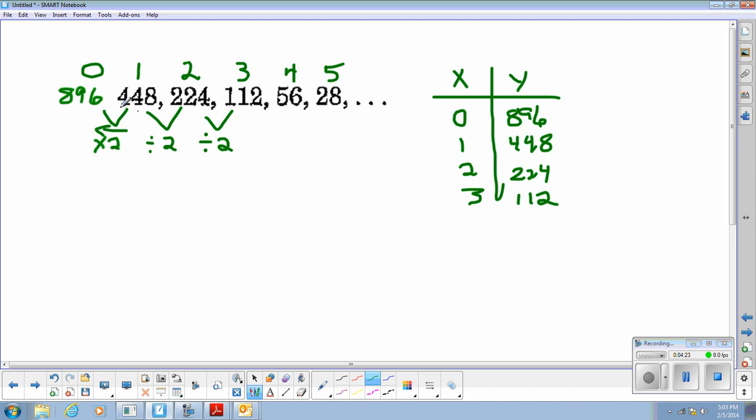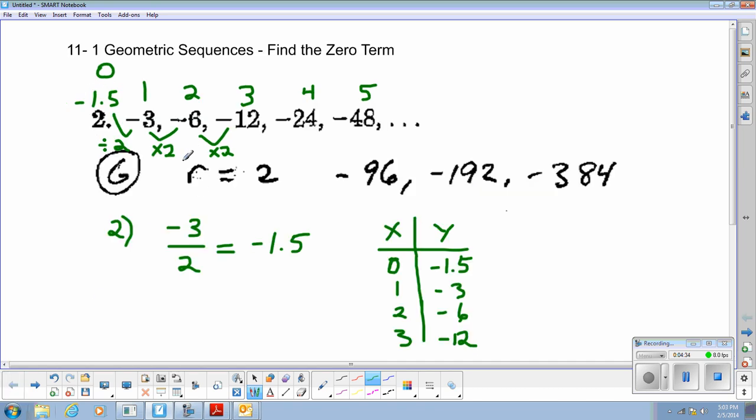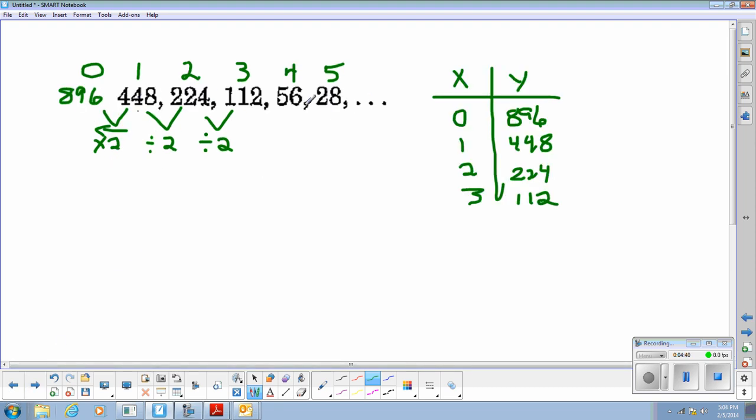Okay, so if it's dividing by 2 in the geometric sequence, then to find my zero term to go backwards, I will multiply by 2. So when I have a review, I have a sequence that was multiplying as it went to the right, divide to find your zero term. If it was dividing as it went to the right, multiply. So you're going to do the opposite of what you did to find the other terms in your sequences.